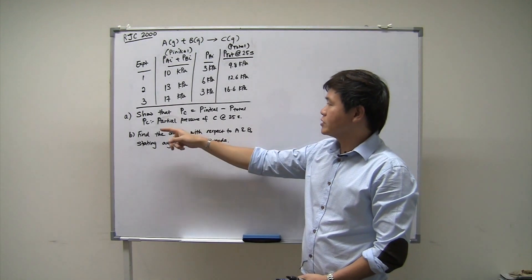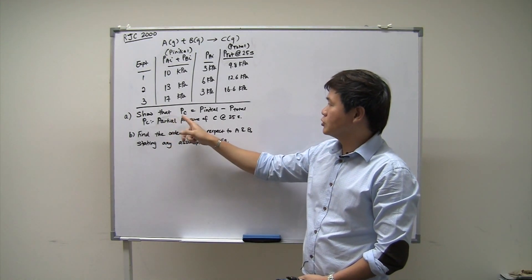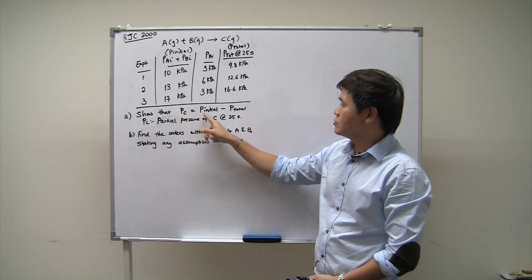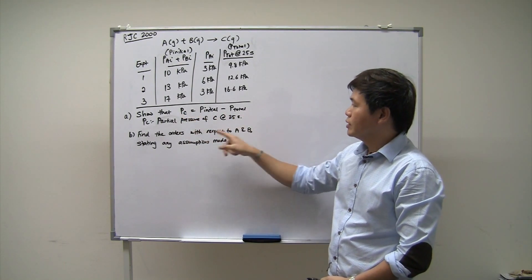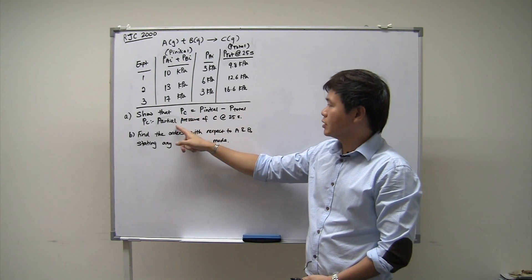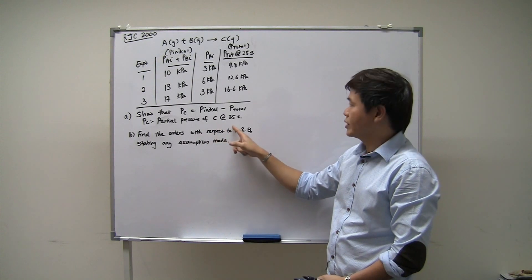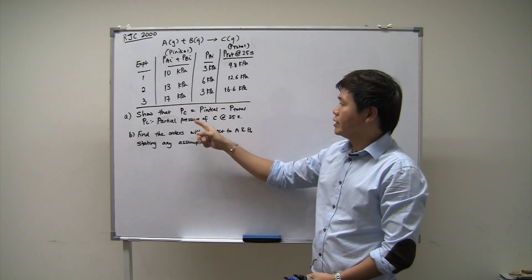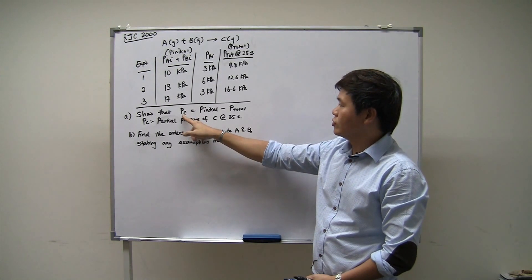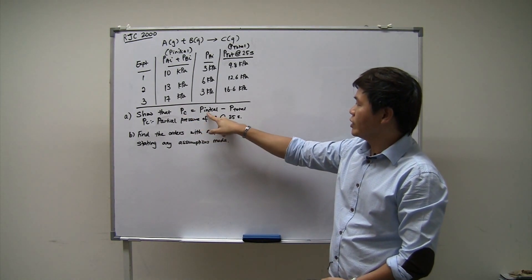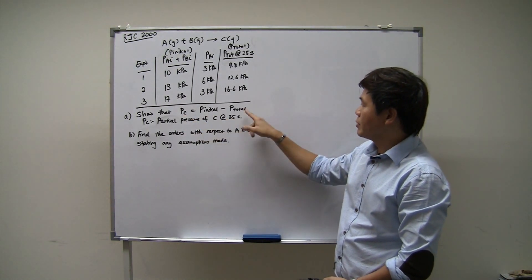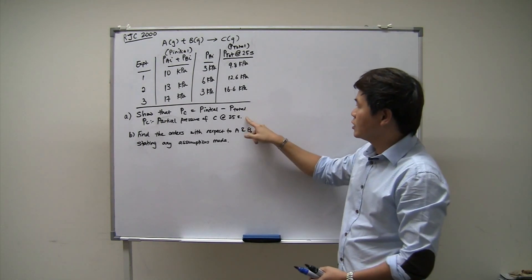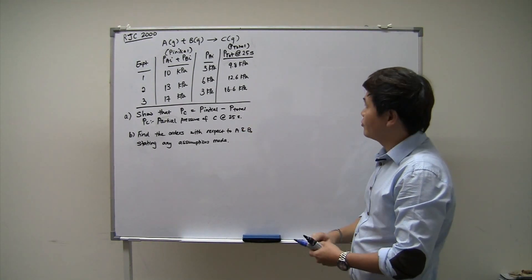The first part of the question asks students to show this relationship: PC equals P_initial minus P_total. PC is the partial pressure of C at the 25th second. So this question asks students to relate the pressure of C at the 25th second to the initial pressures of A and B minus the total pressures of A, B, and C at the 25th second. Let's take a look at how we're going to solve the first part.